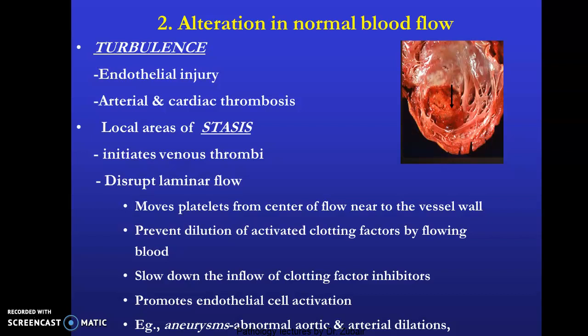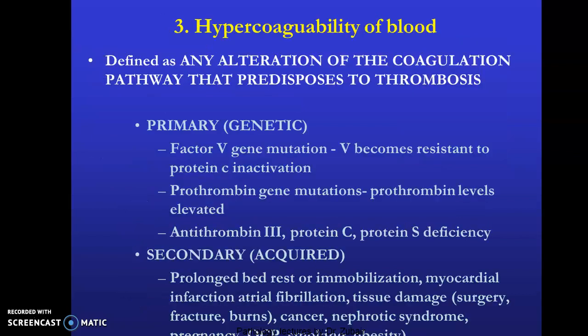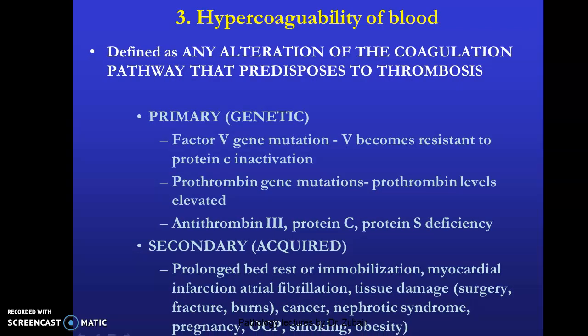Abnormal blood flow also promotes endothelial activation. Examples include aneurysms and myocardial infarction in the region of non-contractile myocardium. The third factor is hypercoagulability of blood, defined as any alteration of the coagulation pathway that predisposes to thrombosis. It can be primary (genetic) or secondary (acquired).